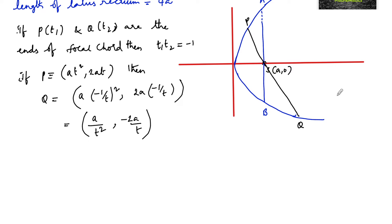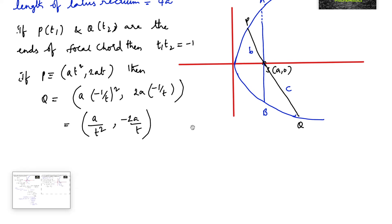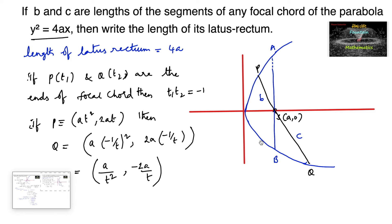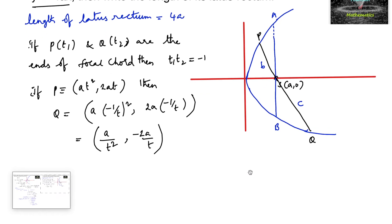It is given that PS = B units and SQ = C units. B and C are the lengths of the segments of the focal chord, so PS = B and SQ = C.